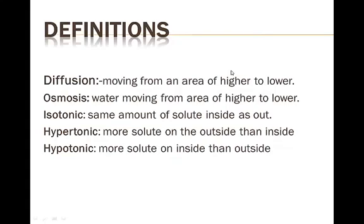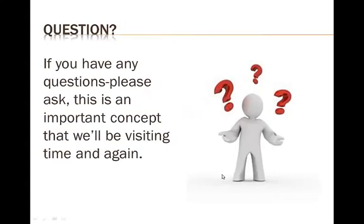Here are a few definitions to remember. Diffusion: moving from an area of higher concentration to an area of lower. Osmosis is the same thing, except it's water moving from higher to lower concentration. Isotonic — 'iso' means the same amount of solute inside as outside. Hypertonic — 'hyper' means more solutes on the outside than the inside. Hypotonic — 'hypo' means more solutes on the inside, or less solutes on the outside. This is a really important concept, and throughout most of our studies we'll be talking about how diffusion and osmosis work with cells.